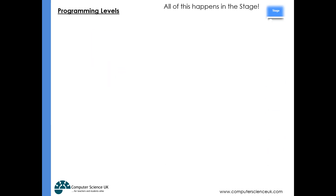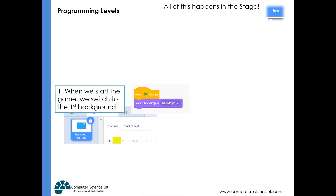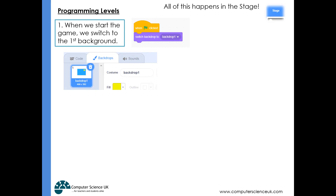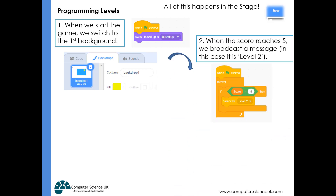How can we program this? Everything happens in the stage - that's really key. If you're looking for certain scripts and trying to develop coding in the sprites area, you've got different scripts than when you're in the stage, so we're going to be focusing on the stage today. When we start the game we're going to switch to background one. We've got a backdrop already drawn with a name - in this case backdrop one - and when we click the green flag we switch to that particular backdrop.